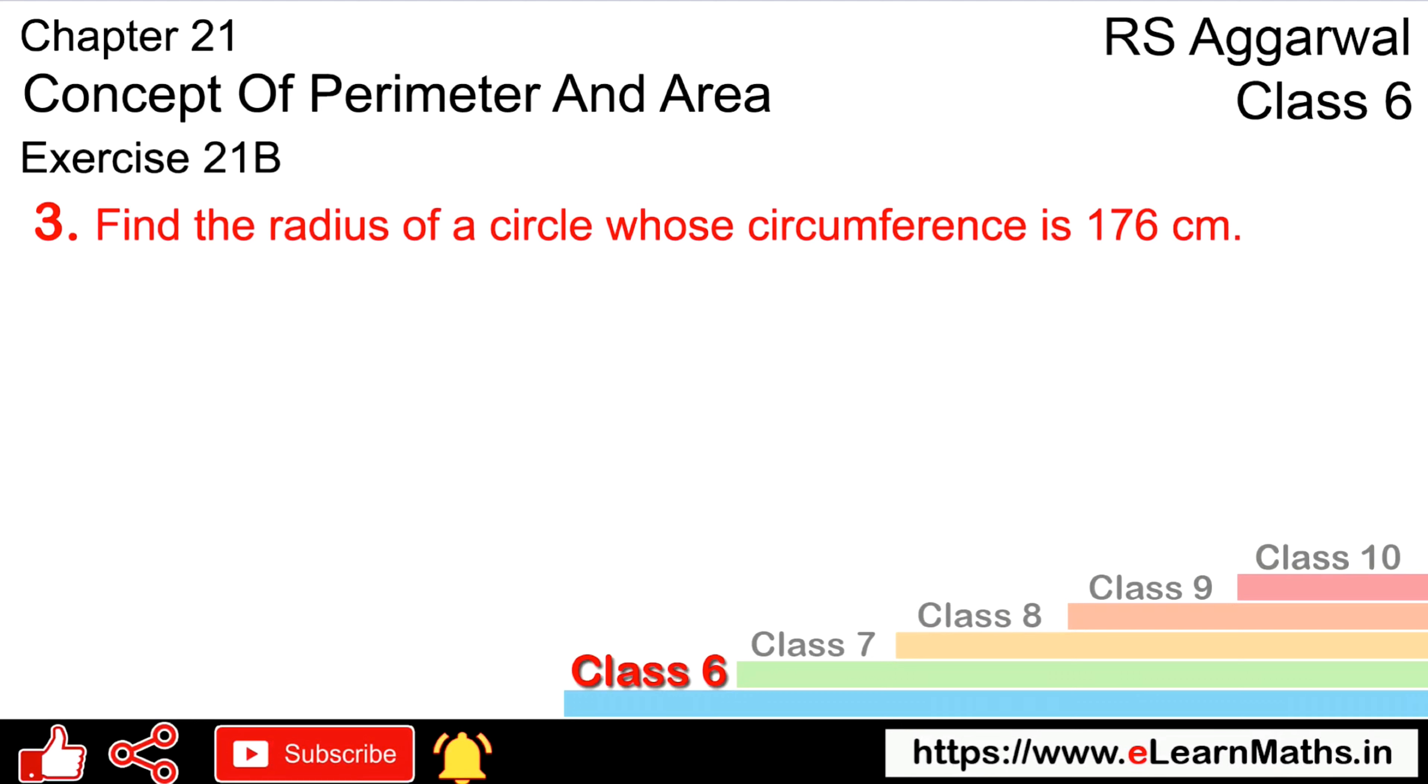Let's do question number 3 of exercise 21B, concept of perimeter and area. Question number 3 is find the radius of a circle whose circumference is 176 cm.